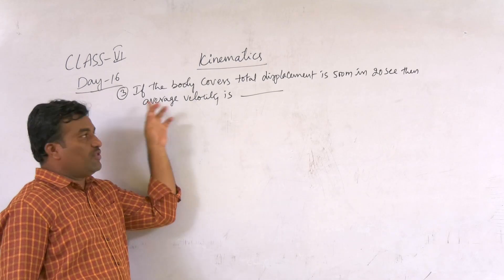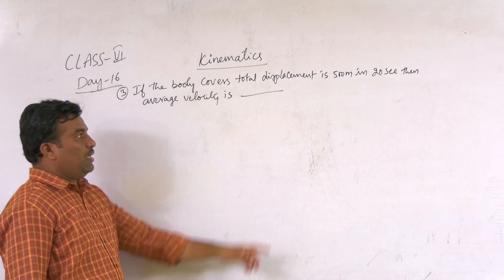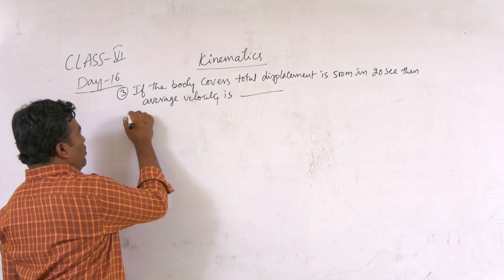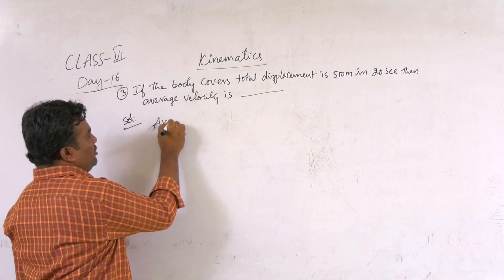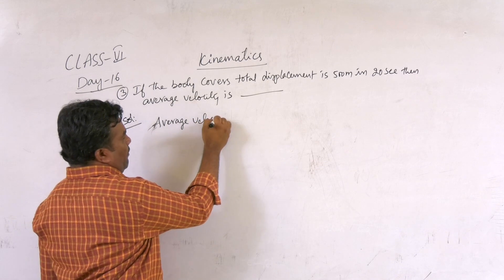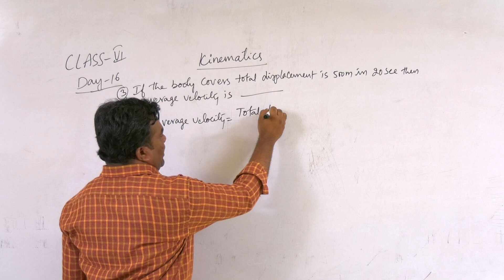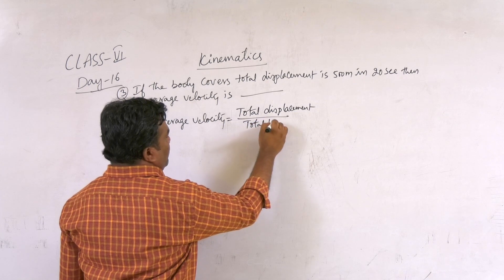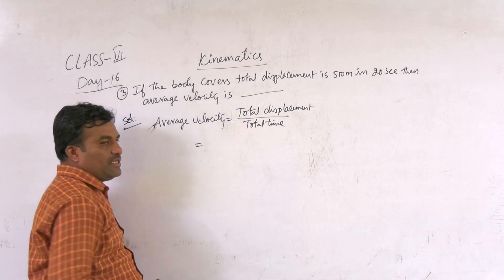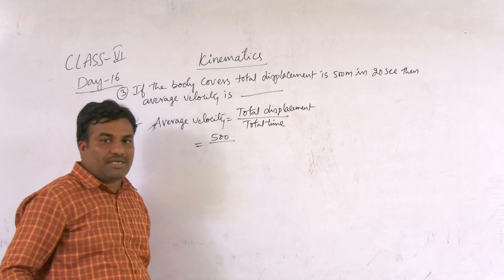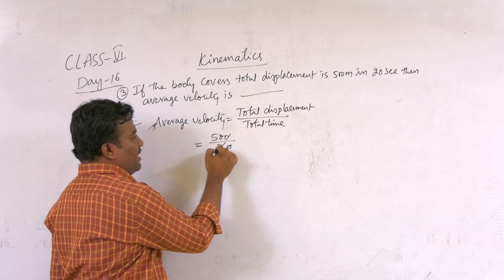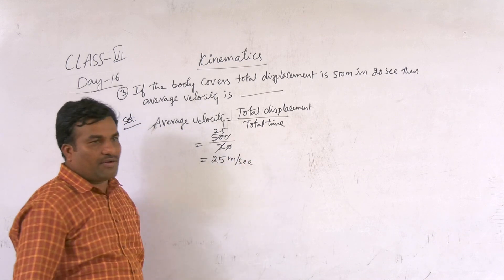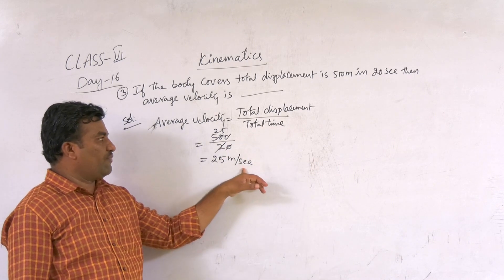Next, another question. If a body covers a total displacement of 500 m in 20 seconds, then what is the average velocity? Again we apply the definition: average velocity equals total displacement divided by total time. Total displacement is 500 m, total time is 20 seconds. Cancelling the zeros gives us 25. So the average velocity is 25 m per second.